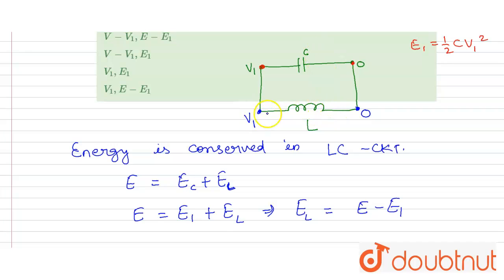The potential across the inductor is V1 and the energy stored is E minus E1. So the correct option is 4th one. Thank you.